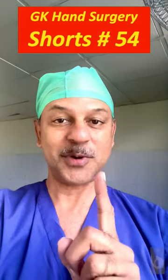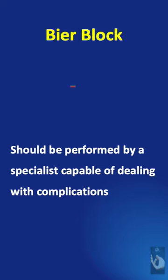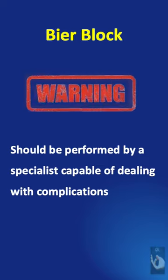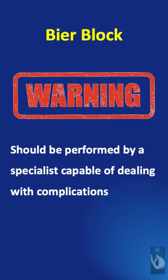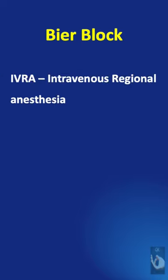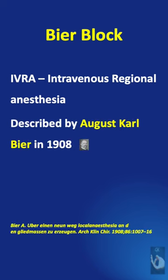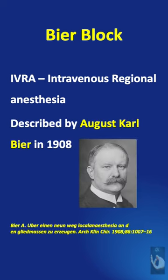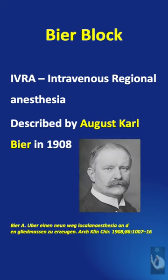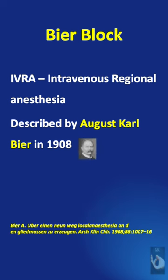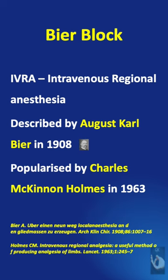Learning hand surgery one point at a time. The Bier block should be performed only by specialists who are capable of dealing with complications. This block is a type of intravenous regional anesthesia described by August Carl Bier in 1908, and was popularized by Charles McKinnon Holmes in 1963.